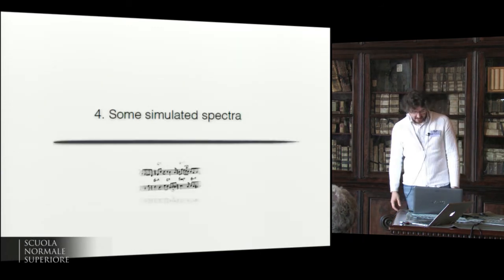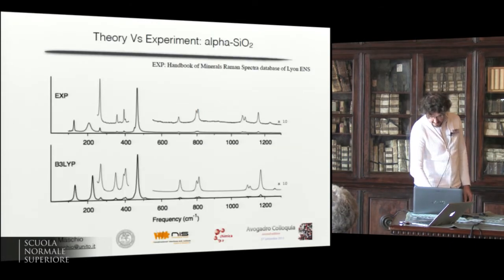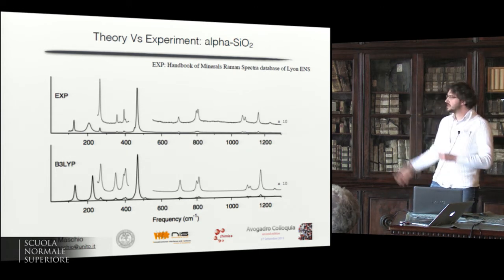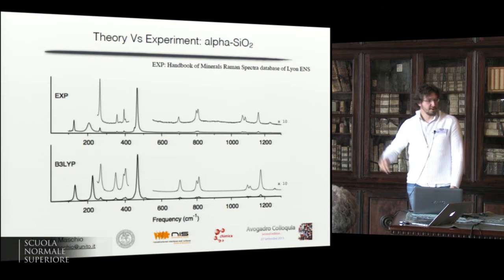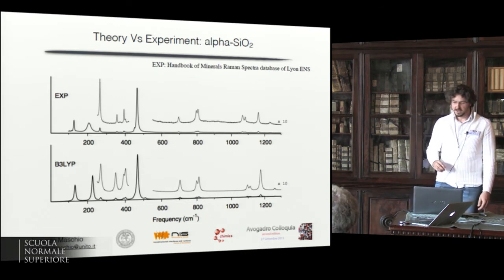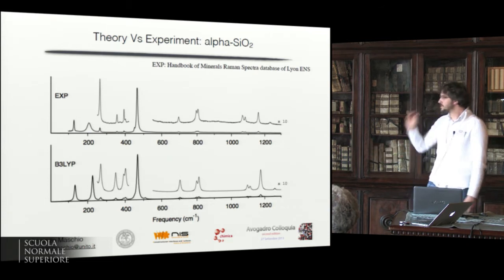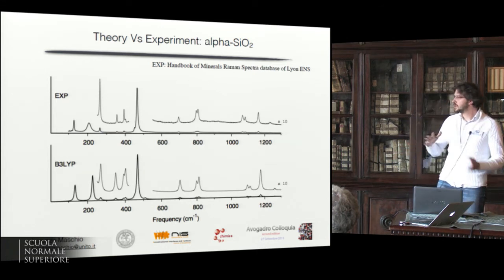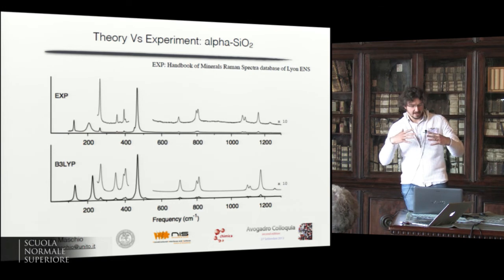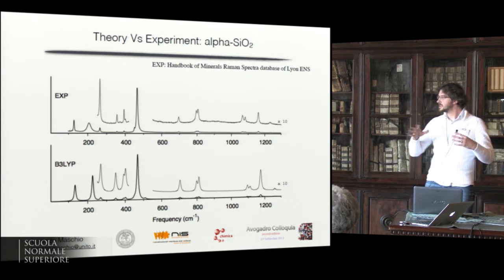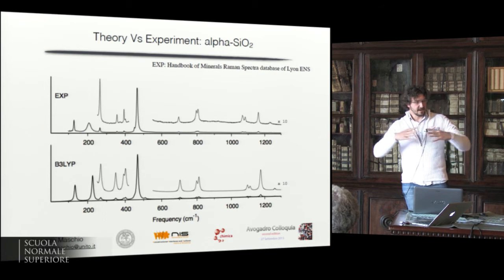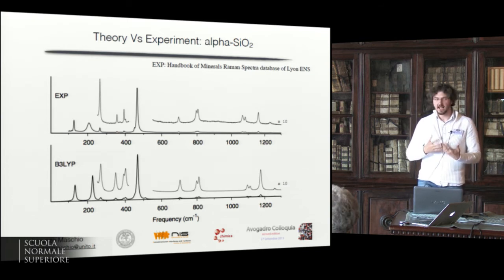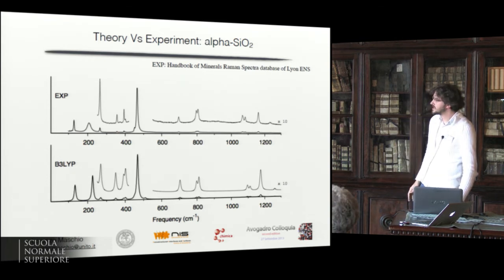Here is the spectrum of alpha quartz. In the top panel you see the experimental spectrum, and in the bottom panel our simulated spectrum. The high-frequency part of the spectrum is remarkably good. The low-frequency part is less good mainly because we are not able to simulate the width of the peak — the alpha quartz low-frequency peak is very broad while we simulate it as very narrow, and the intensity is proportional to the area of the peak, which is why it is not so optimal.